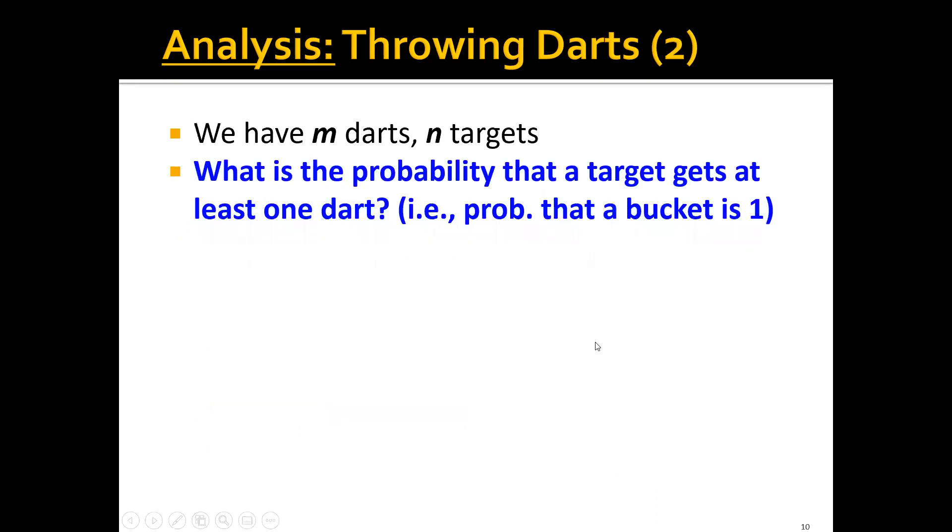Now, the question we ask is, what's the probability that a target gets at least one dart? This is equivalent to the probability that one bucket is one. Let's see how we can compute this. Since we have n targets and we're throwing the darts randomly, the probability that one target x is hit is just 1/n. The probability that target x is not hit by one dart is 1 - 1/n. Since we have m darts in total, the probability that any of these m darts does not hit this target will be (1 - 1/n)^m. And the probability that at least one dart actually hits target x will be 1 minus that.